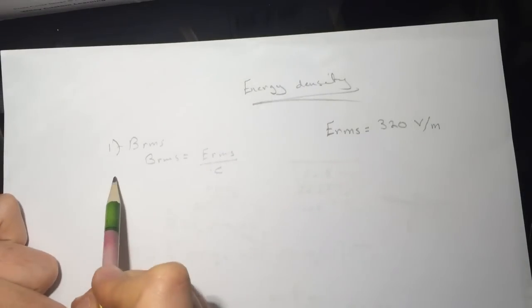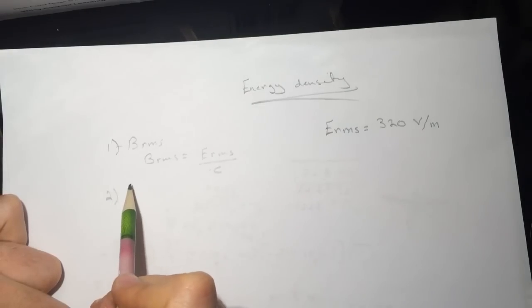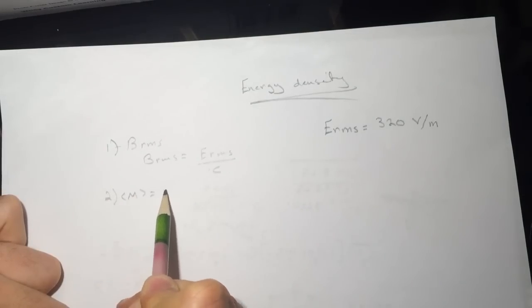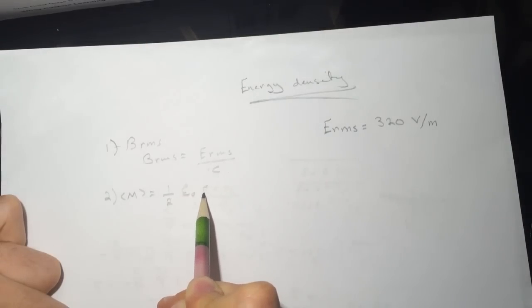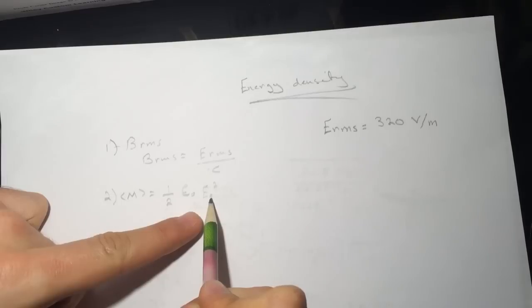Question number two is asking find the average density. So the average density U will be equal to half epsilon naught E naught squared, and this E naught squared is the same as...